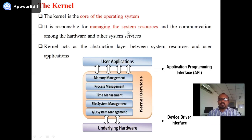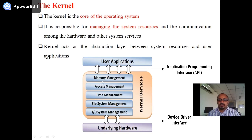What is the kernel? The kernel is the core part of the operating system — the minimal operating system required. The core part of the operating system provides memory management services, process management services, time management services, file system management services, I/O system management services, and manages system resources. The most important system resource is CPU time.